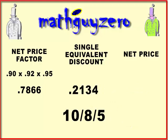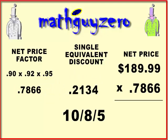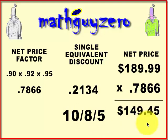To calculate the actual net price after all the trade discounts have been applied, you simply take the net price factor and multiply it by the selling price — the selling price from the original problem. So the new price after applying all these trade discounts would be $149.45. Remember to round properly.